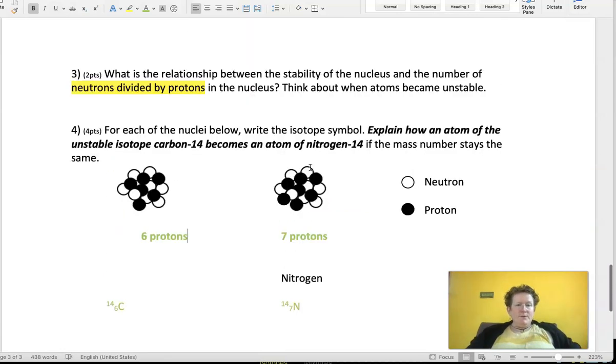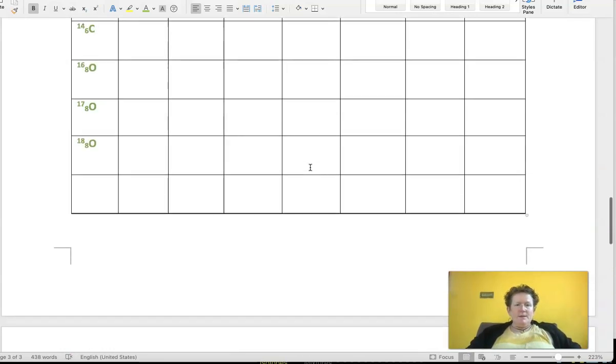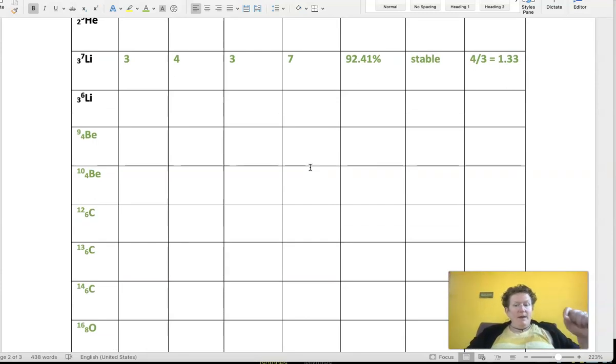So thanks very much for watching. This is our lab on isotopes. Remember, an isotope is the same element, it just has a different number of neutrons. It has the same number of protons as all the other atoms of that element, but we change the number of neutrons. And that also changes the atomic mass or the mass number. It does not change the atomic number, it changes the mass number. The mass number is protons plus neutrons. Thanks so much for watching. This is Dr. B signing off on the isotope lab.